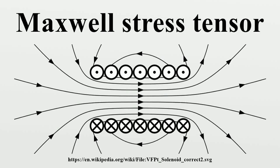The Maxwell stress tensor is a second-ranked tensor used in classical electromagnetism to represent the interaction between electromagnetic forces and mechanical momentum.